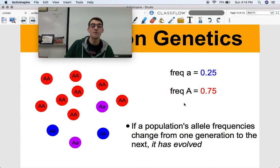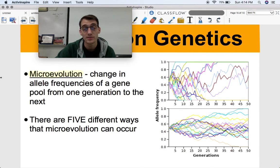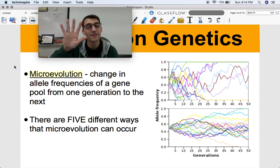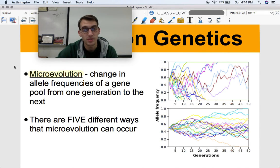This is more specifically what we call microevolution. It's a change in allele frequencies of a gene pool from one generation to the next. And in our next video, we're going to talk about the five different ways that microevolution can occur. So that's it for this video. We're going to be doing part two next week. Please let me know if you have any questions and we'll see you next time.